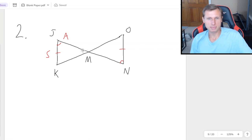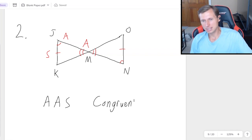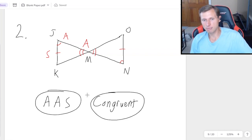except I do have vertical angles at M. And what do vertical angles mean? It means that even though I didn't mark it, you need to know that those angles are congruent. In other words, I have angle, angle, side here. Angle, angle, side. So that means they are congruent. And that is our final answer.